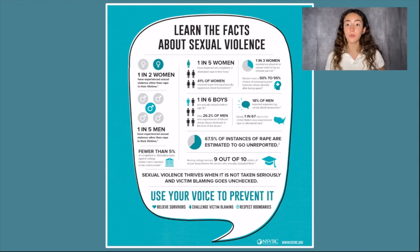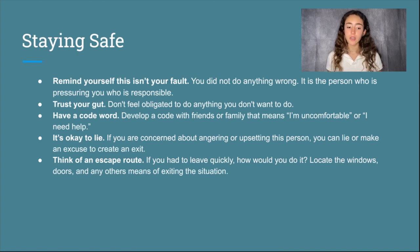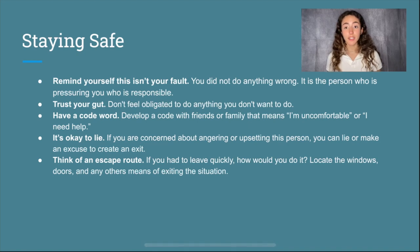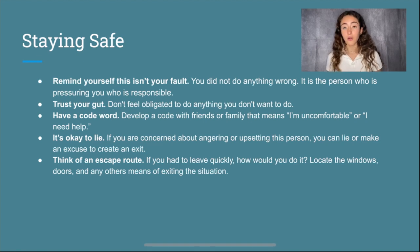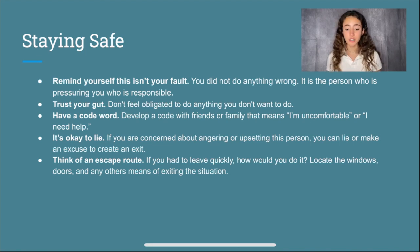Use your voice to prevent it. Staying safe: Remind yourself that this isn't your fault. You did not do anything wrong — it is the person who is pressuring you who is the responsible one. Trust your gut. Don't feel obligated to do anything that you don't feel is safe or that you don't want to do. Have a code word. Develop a code with friends or family that means 'I'm uncomfortable' or 'I need help' so that you can text them quickly and easily. It's okay to lie. If you are concerned about angering or upsetting this person, you can lie or make an excuse to create a safe exit for yourself.